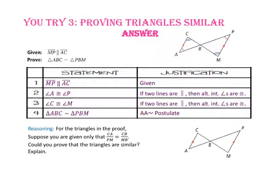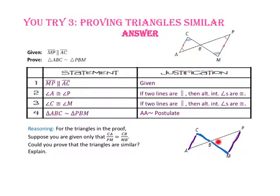For the triangles in the proof, suppose you are given only that the length of side CA to side PM equals the length of side CB to side MB. Since sides CA and PM are proportional to sides CB and MB, we would need the included angles C and M to be congruent. Since all we know is that angle CBA and angle MBP are vertical angles — which are congruent — we could not prove these triangles similar.